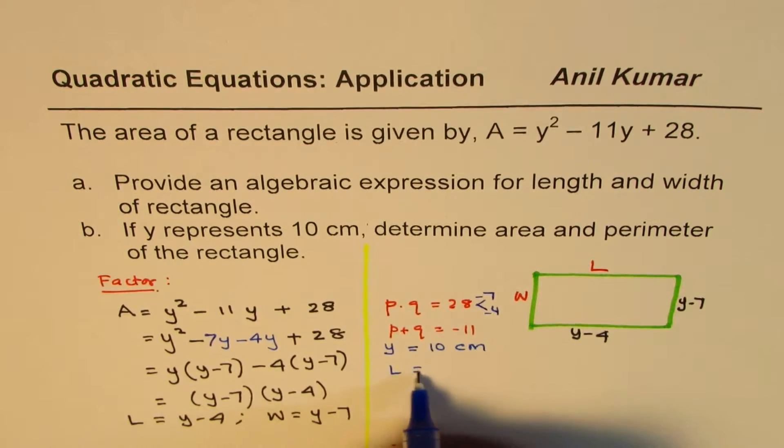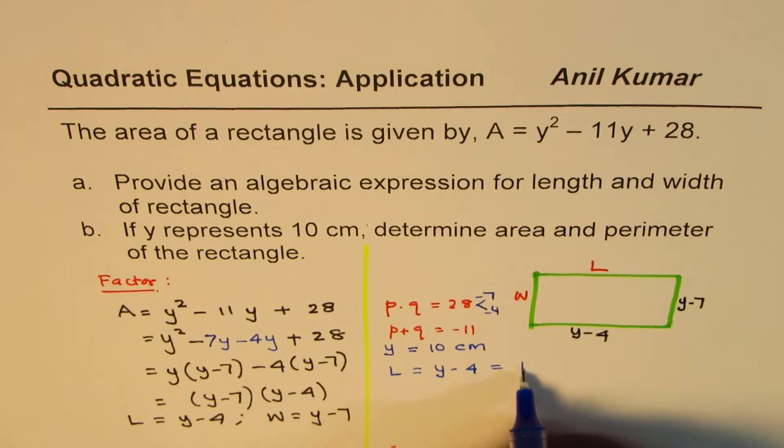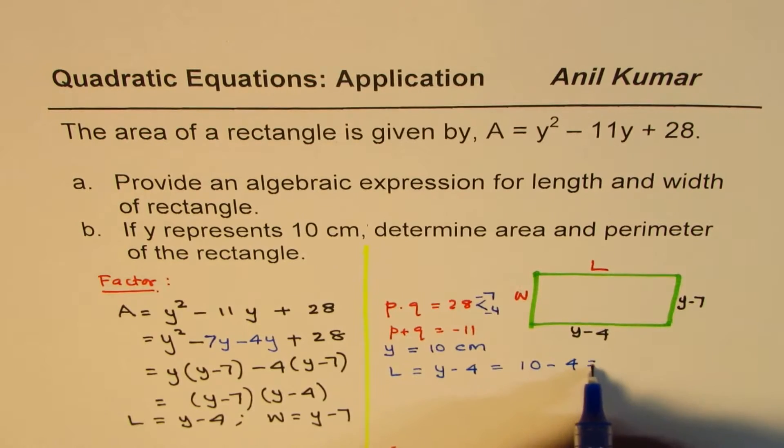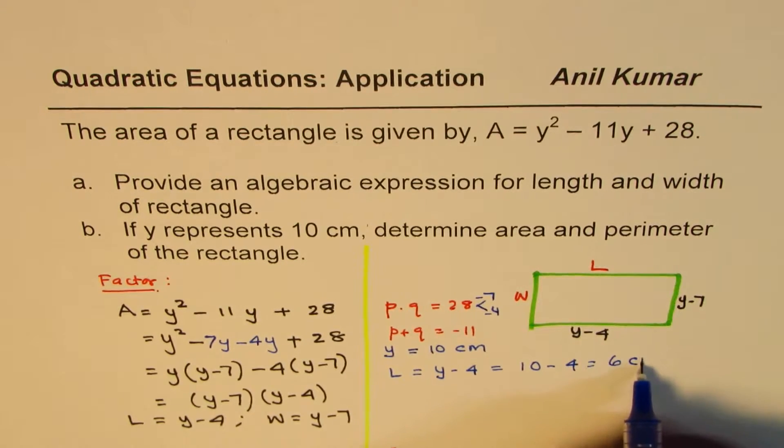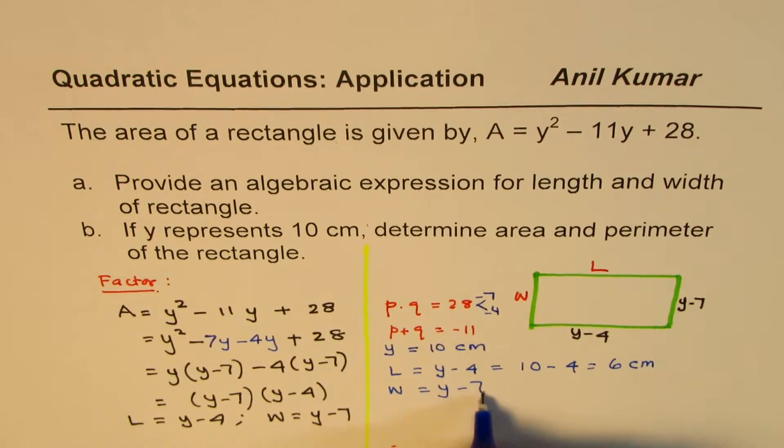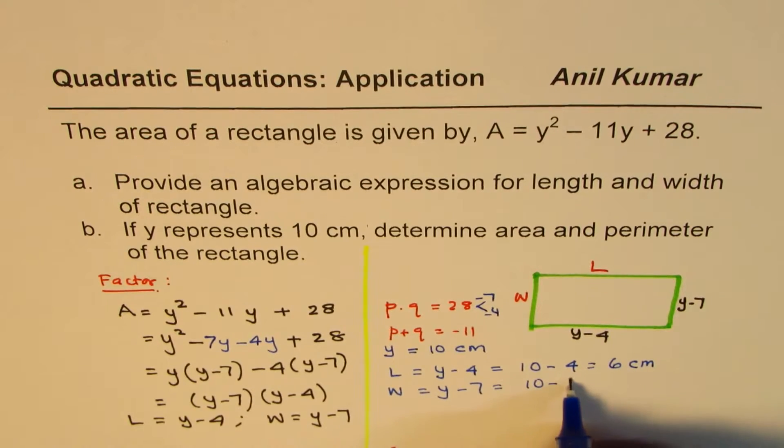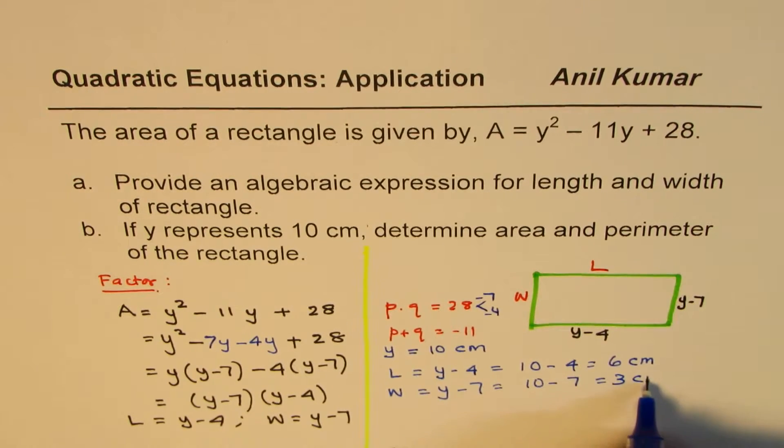Now we know length equals Y minus 4. If I substitute 10 here, I get 10 minus 4 and that gives me 6 centimeters. Similarly, for width, I will substitute in Y minus 7, value of 10, which is given to us for Y. 10 minus 7 is 3, so we get 3 centimeters.